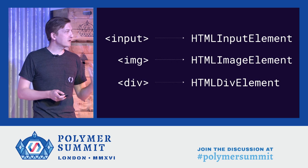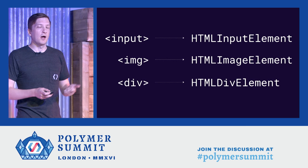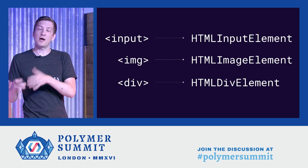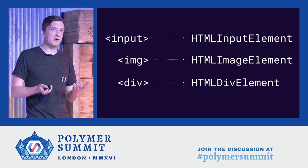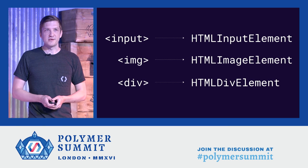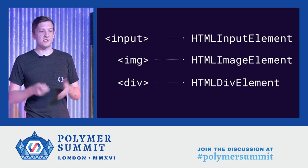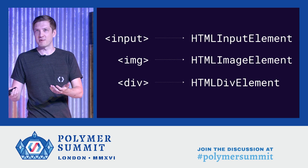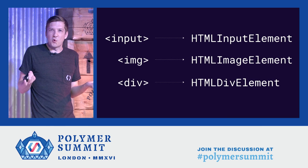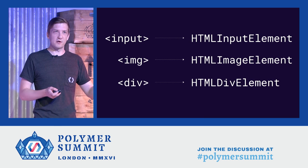For instance, when the parser sees an input tag, it creates an object implementing the HTML input element interface — that object has unique properties for validation and autocomplete. When it sees an image element, it creates an object implementing the HTML image element interface with a source property that can fetch things. Even a div, which doesn't do much, still has its own interface.